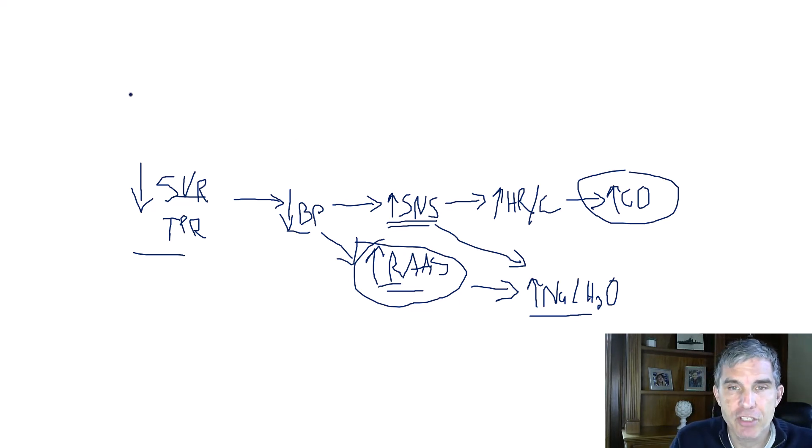Now, besides all of these changes, another thing happening in cirrhosis is that there's decreased synthesis of albumin by the liver. And albumin is very important for determining the oncotic pressure in capillaries.